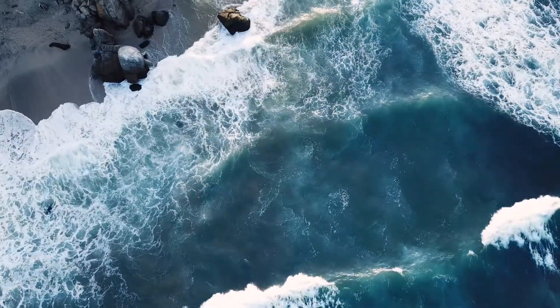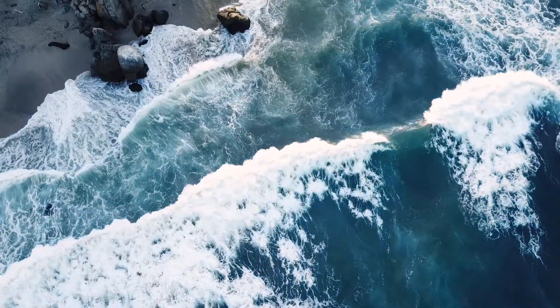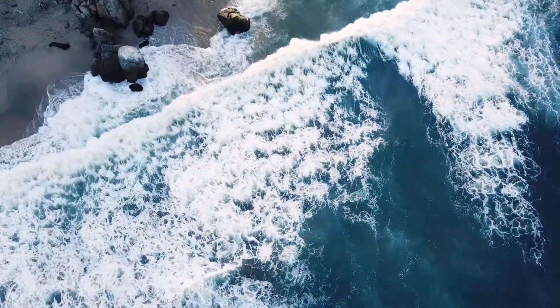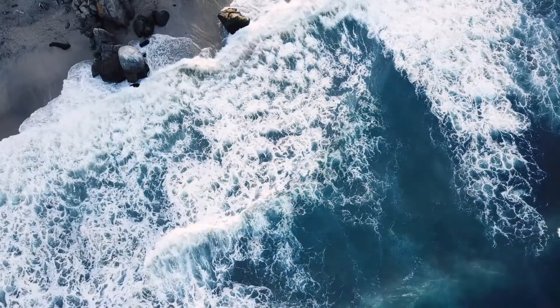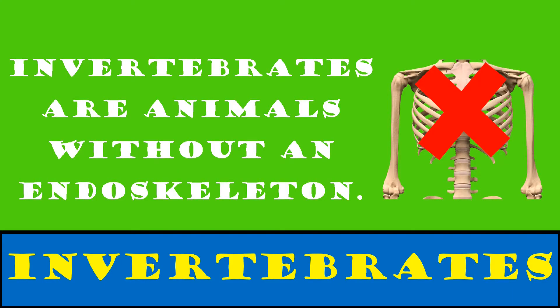Invertebrates can be found all over the world. Invertebrates are animals without an endoskeleton — they have no internal support system. Let's look at the groups of invertebrates.